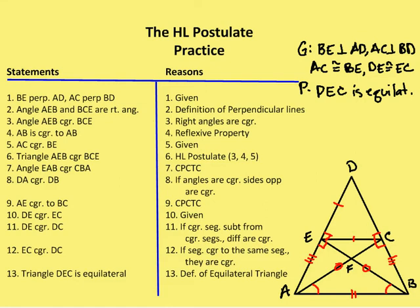Let's take a look at the problem — we're getting into lengthier proofs here. I have BE perpendicular to AD and AC perpendicular to BD, and I've marked up the diagram with the right angle marks respectively. I know that angle AEB and BCE are right angles, and that's the definition of perpendicular lines. I can say that angle AEB is congruent to BCE because right angles are congruent to each other.